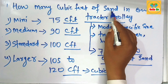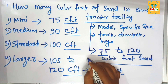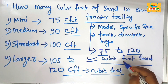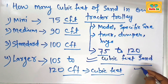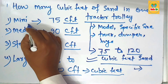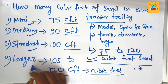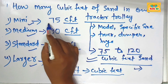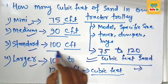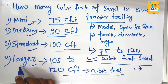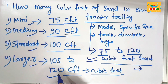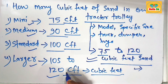In summary, one tractor trolley sand capacity is 75 to 120 cubic feet of sand material. The mini size carries 75 cft, medium 90 cft, standard size 100 cft, and the larger size comes in 105 to 120 cubic feet of sand.